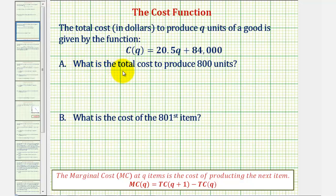Part A: What is the total cost to produce 800 units? For part A, they're telling us that Q equals 800, we want to find C of Q, which is the total cost.